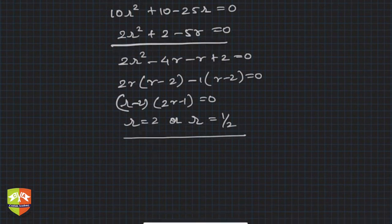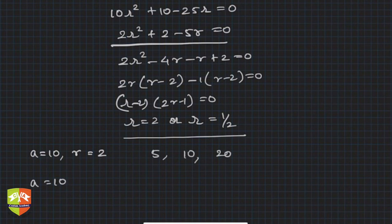Now let's find out: if a is 10 and r is 2, in that case it is 5, 10, and 20. And if a is 10 and r is 1/2, then it is 20, 10, 5. So these are the two GPs.